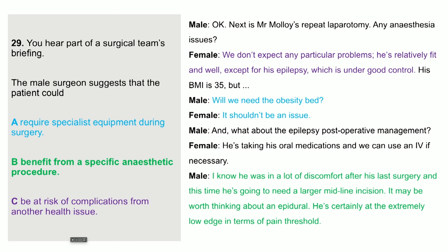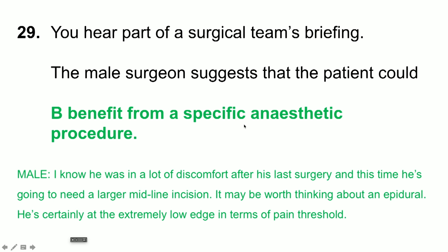Question 29: you hear part of a surgical team's briefing. The male surgeon suggests that the patient could what? The answer is B — benefit from a specific anaesthetic procedure. The male says: I know he was in a lot of discomfort after his last surgery, and this time he's going to need a larger midline incision — it may be worth thinking about an epidural. He's certainly at the extremely low edge in terms of pain threshold. The other options were mentioned but were incorrect or contradictory.